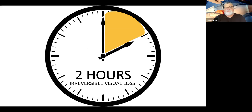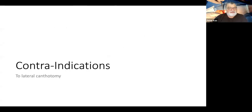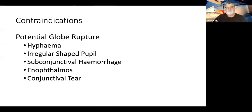We've got about two hours before we start getting irreversible visual loss. That's why when you've got a patient with acute glaucoma or other reasons causing these increased pressures, you've got to get them down quickly. Contraindications to lateral canthotomy include potential globe rupture — if there's been some trauma — an irregular pupil, a hyphema, enophthalmos, or a conjunctival tear. She had none of those things.